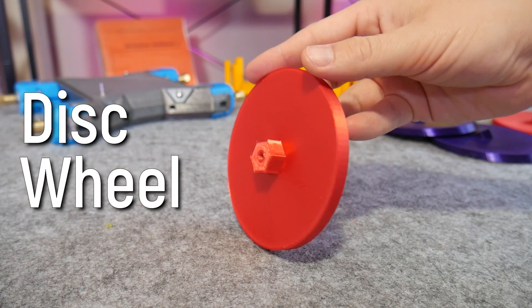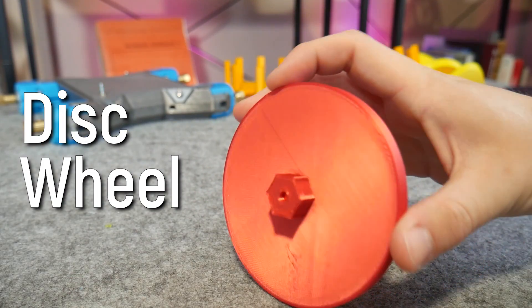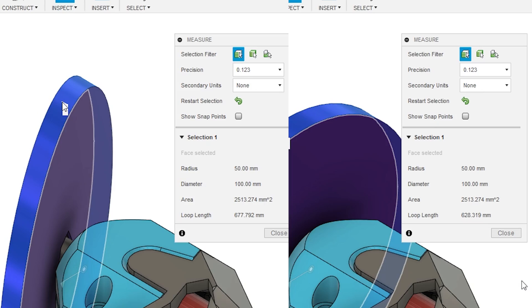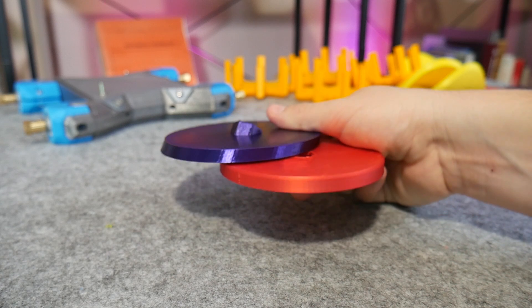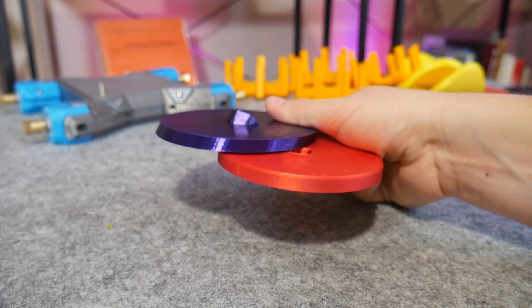First things first, a basic disc. What blows my mind is the fact it has the same surface area as the wobbly wheel despite having a shorter edge length. Geometry be weird sometimes.